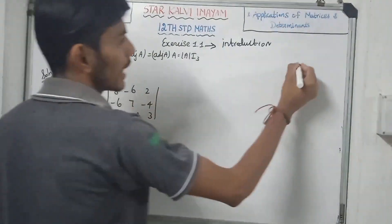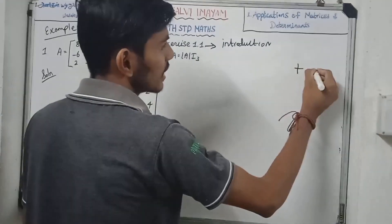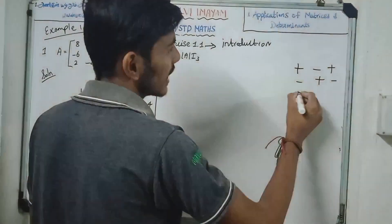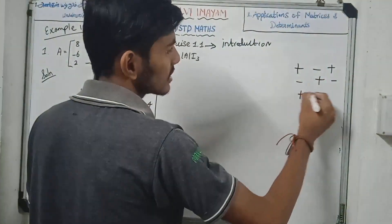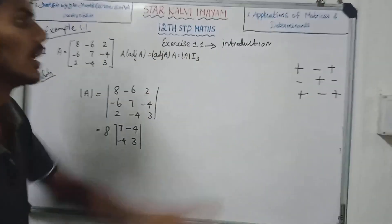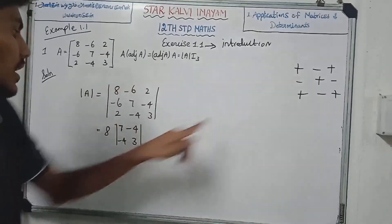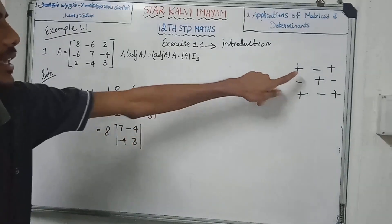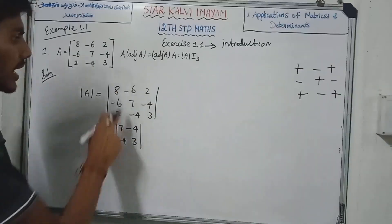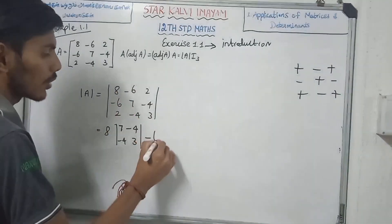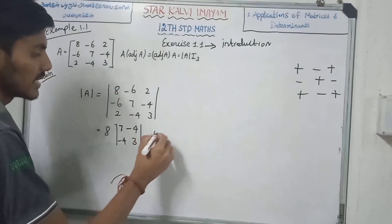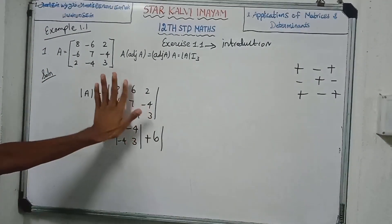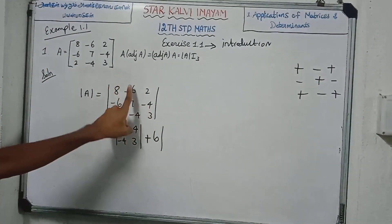The symbol pattern is: plus, minus, plus, minus, plus, minus, plus, minus, plus — alternating signs for the cofactor sign matrix. This row we will use.